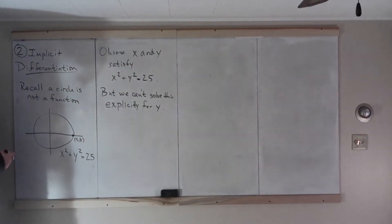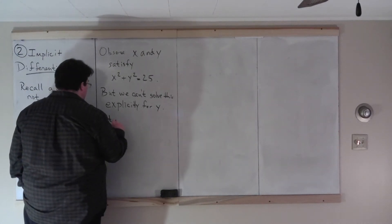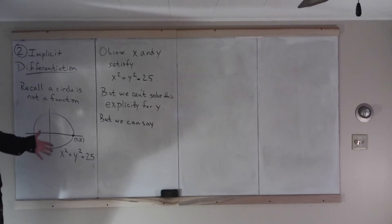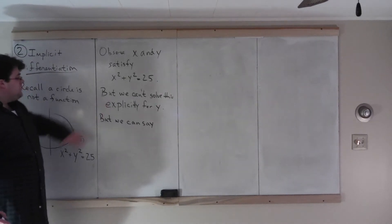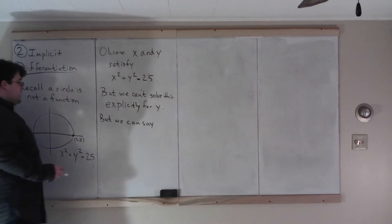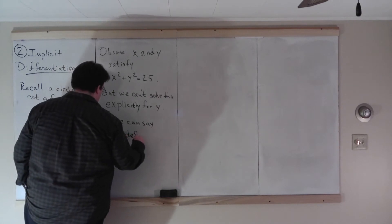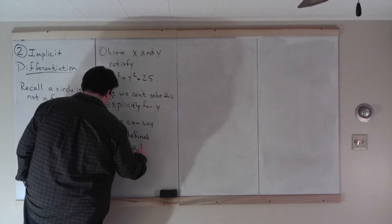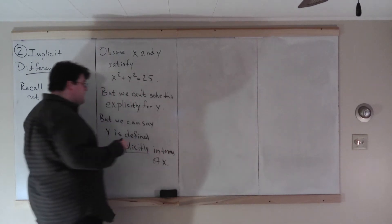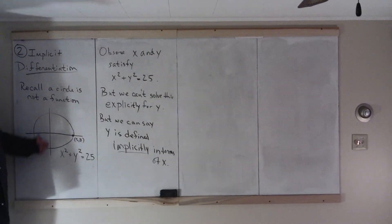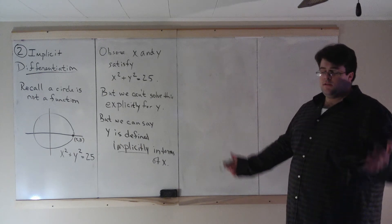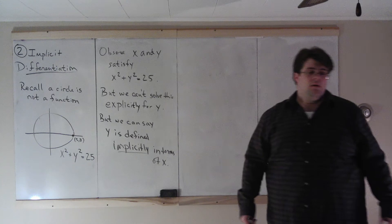What we can say is that y is defined implicitly in terms of x. Y is related to x somehow — it's not explicitly given by something with x's. That's explicitly. But we can say y is defined implicitly in terms of x. It's not explicitly solved in terms of x, but it is related to x.